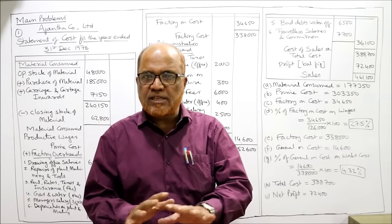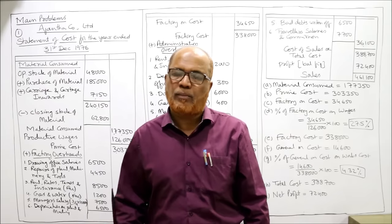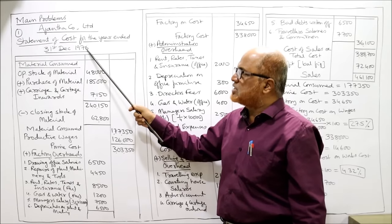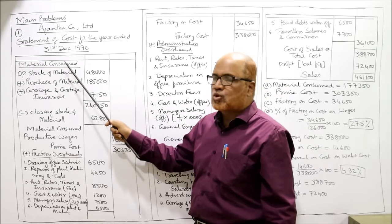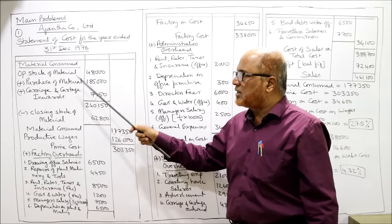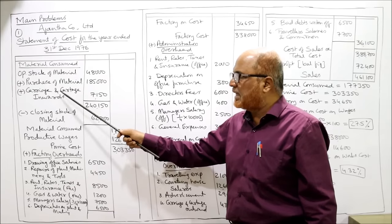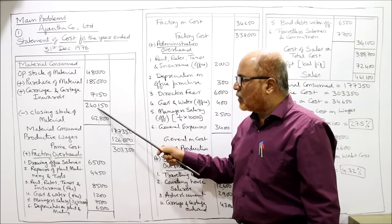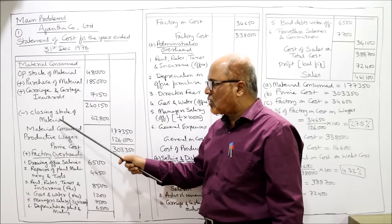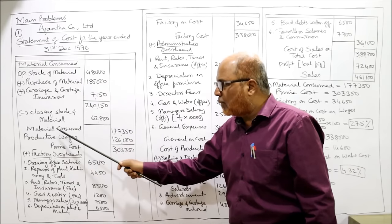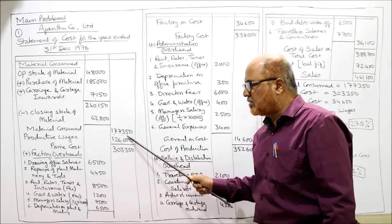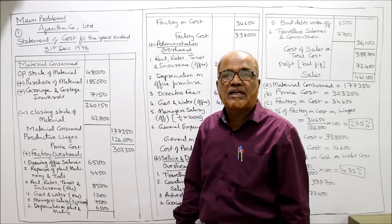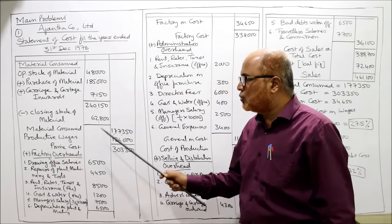Now see the solution — Ajanta Company Limited, Statement of Cost for the year ended 31st December 1976. Material consumed: opening stock of material 48,000 plus purchase of raw material 1,85,000 plus carriage and cartage inward 7,150 equals 2,40,150, less closing stock of raw material 62,800, so material consumed is 1,77,350. Remember which items are added and which are deducted to calculate material consumed.